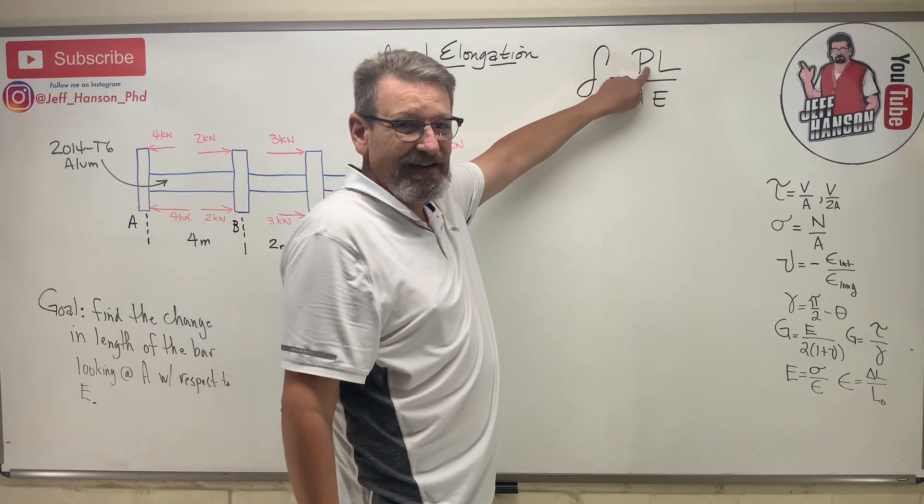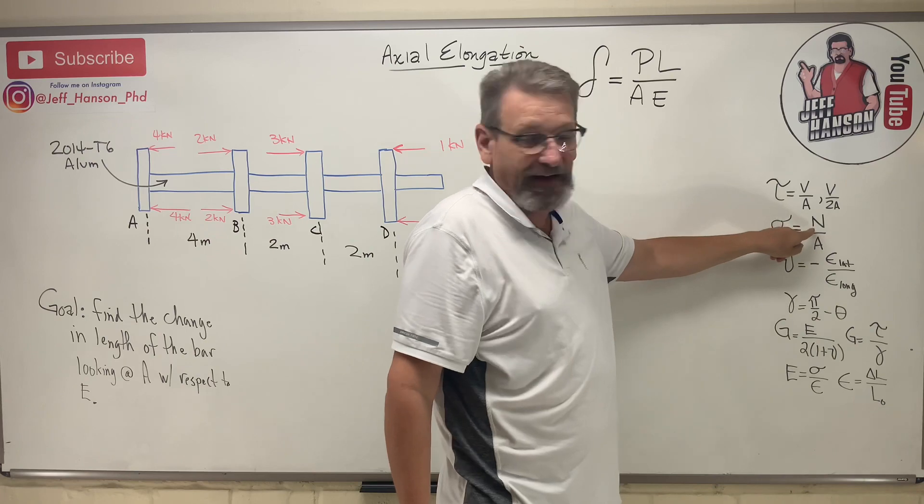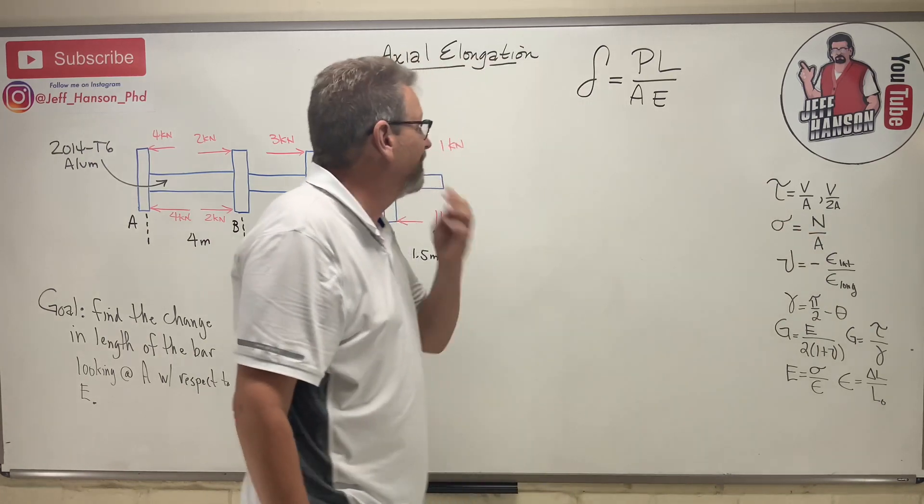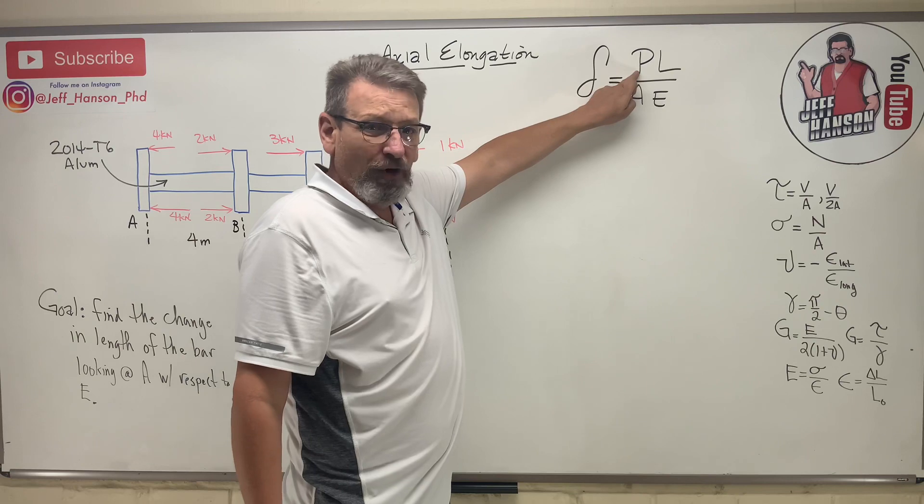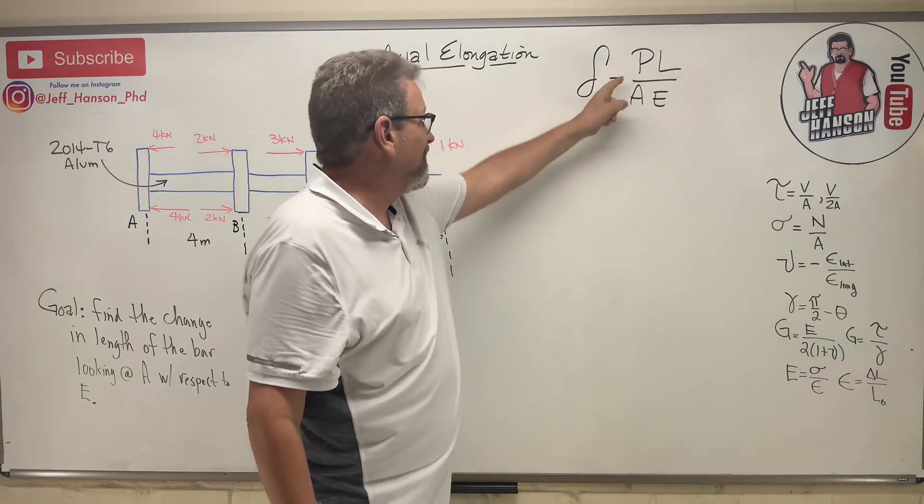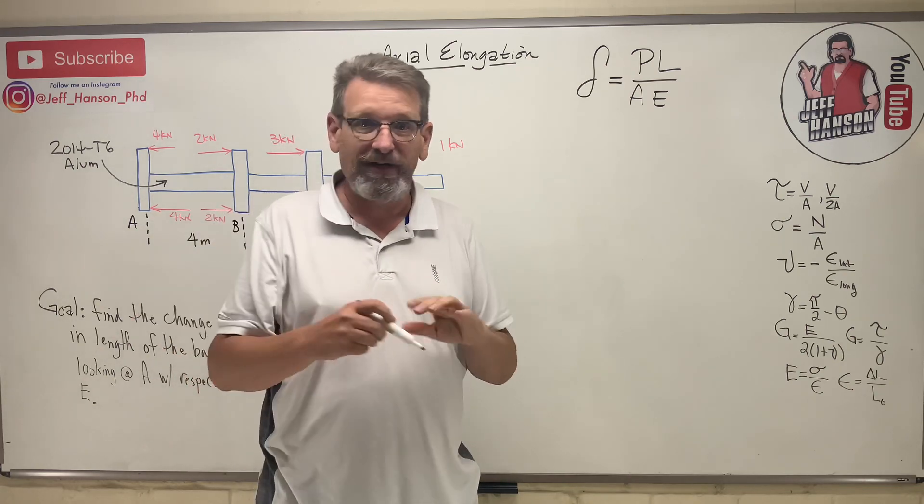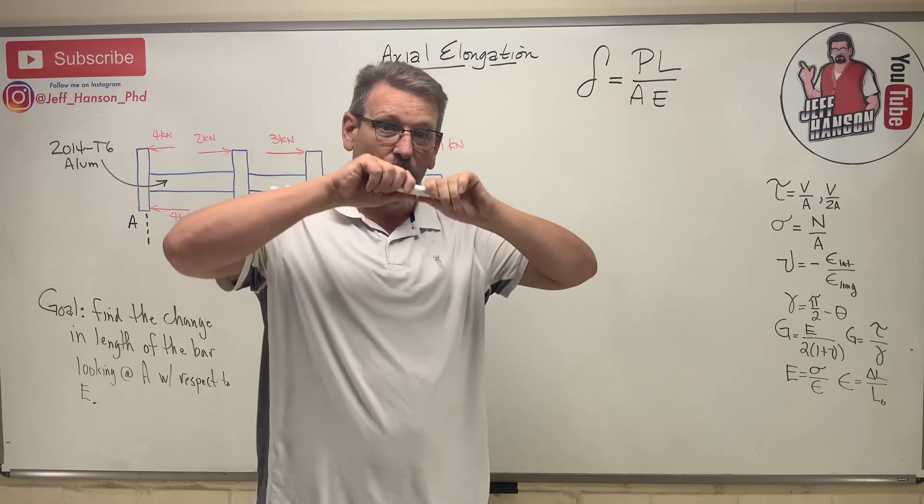There's some familiar items in this equation. P we usually see as a force. P over A is simply the force, the axial force that's making the beam either longer or shorter. Think of P as standing for push or pull.